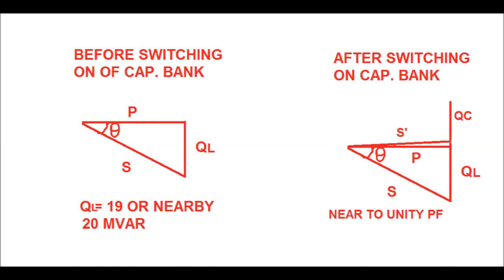If Q_L is equal to or close to 20 MVAR, then after switching on the capacitor bank it will completely nullify the lagging reactive part Q_L that was earlier supplied by the system. Therefore the power factor angle comes close to zero and the power factor comes close to unity. That is how the power factor is improved by switching on the capacitor bank.